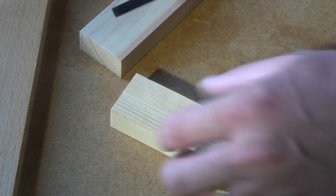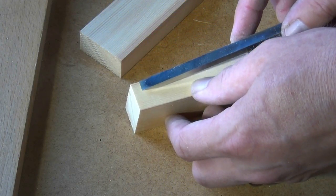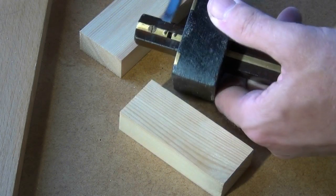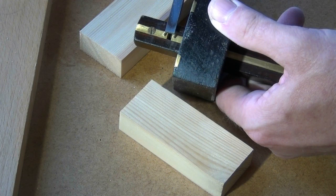I've selected a mortise chisel which is approximately one third the width of the material I'm working in, and I've set my mortise gauge to the same width as the mortise chisel.